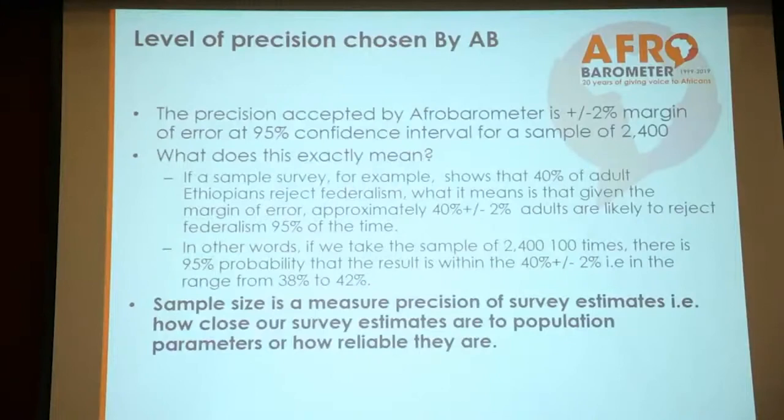The precision accepted by Afrobarometer is plus or minus two percentage points margin of error at 95% confidence interval for a sample of 2,400. What does this exactly mean? It means if a sample survey shows that 40% of adult Ethiopians reject federalism, given the margin of error, approximately 40 plus or minus 2 percent of adults are likely to reject federalism 95% of the time. In other words, if we take the sample of 2,400 one hundred times, there is a 95% probability that the results will fall within the range of 40% plus or minus 2%. Sample size is a measure of precision of survey estimates — how close they are to the population — and should not be confused with representativeness.